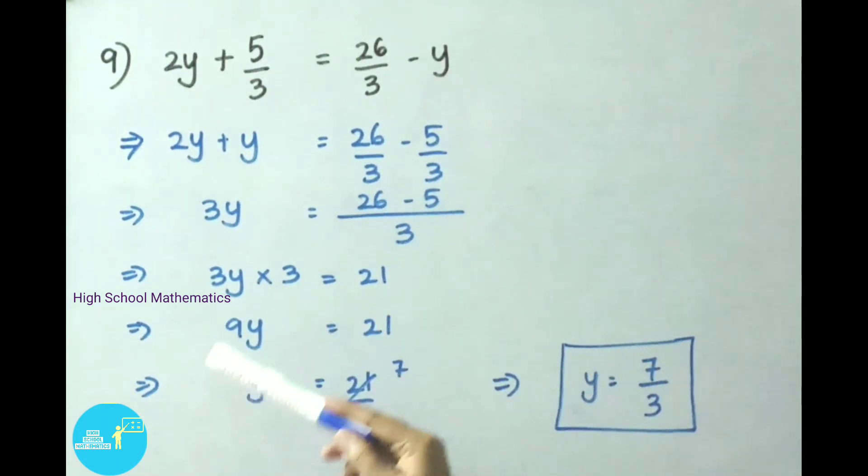That implies 3y into 3, that is 9y, equals 21. Next step: y equals 21 by 9. Here 9 is multiplying, on transposing it becomes divided by. So y value we got here 21 by 9. 3 table: 3 times 9 and 7 times 21. Therefore we got y value as 7 by 3.